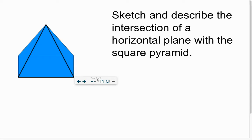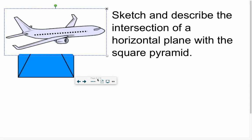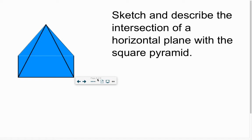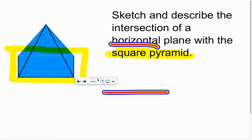It says, sketch and describe the intersection of a horizontal plane, not this type of plane, but a piece of paper with a square pyramid. Now, this is important. It's telling us the bottom down here is a square. It doesn't quite look like it, but it is. We have a horizontal plane, which goes like the horizon, left to right. Don't think of it as up and down. That is wrong.